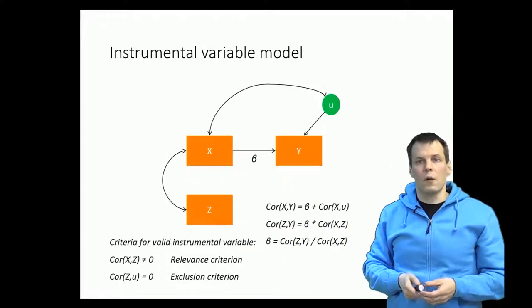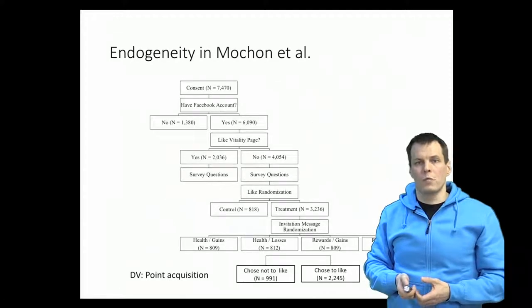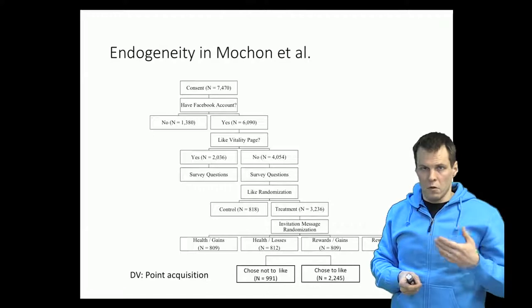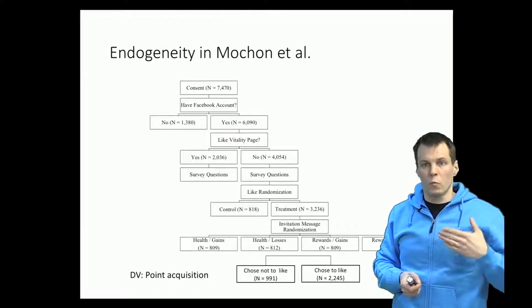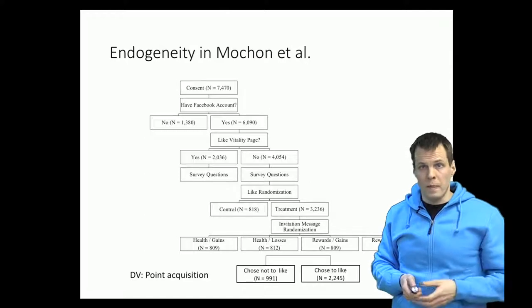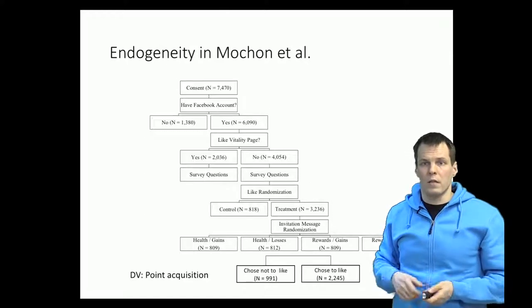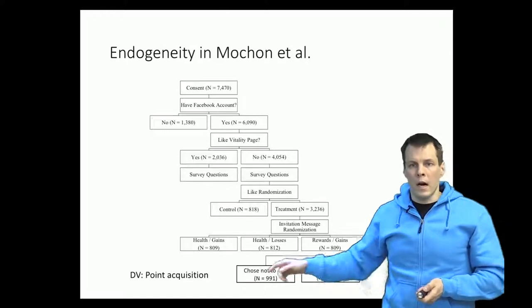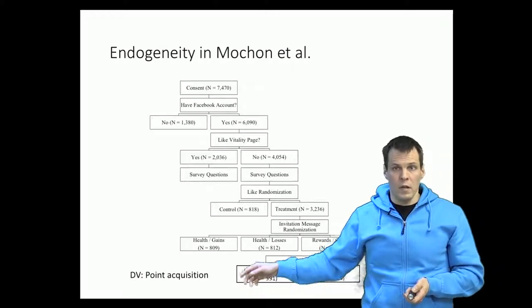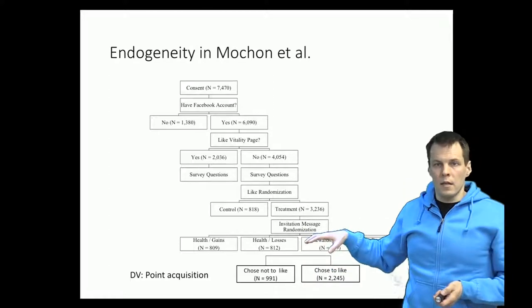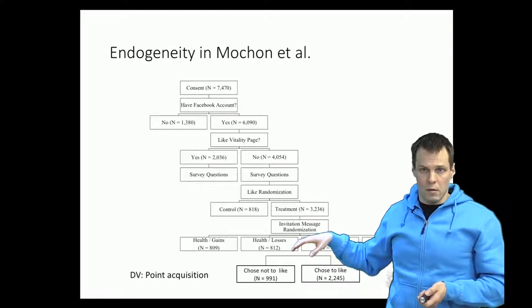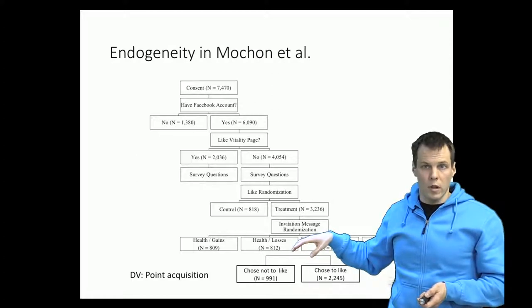Let's take a look at an example. In Mockhölm et al.'s paper, they apply instrumental variables. To understand the instrumental variable used there, we first need to understand the endogeneity problem they are addressing. Their dependent variable was point acquisition — people acquiring points in a service — and they are testing whether the decision to like the Facebook page of that service leads to more point acquisition.